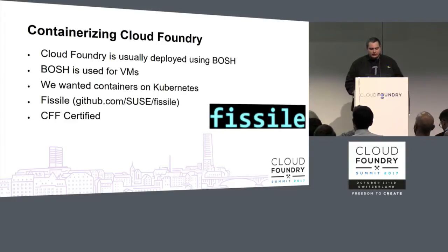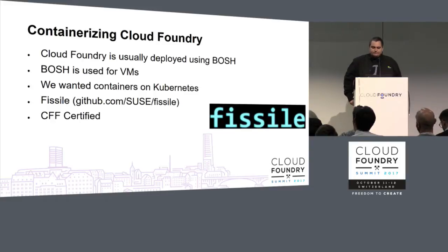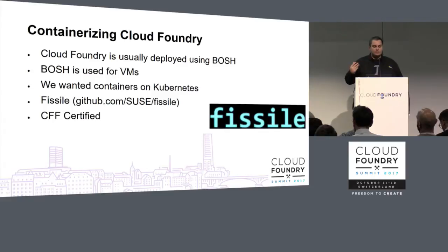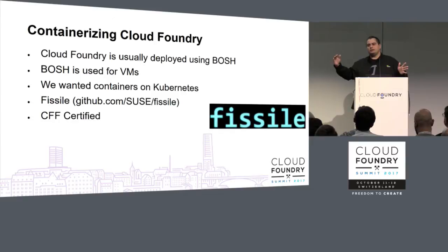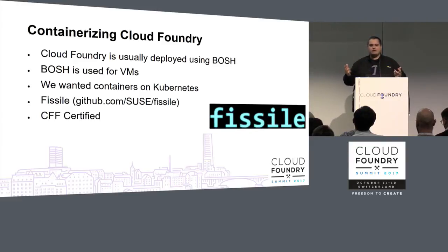So how are we containerizing Cloud Foundry? We all know that Cloud Foundry is usually deployed using BOSH, which is the toolchain that allows deployment of highly complicated systems on top of VMs. But we wanted to do containers on top of Kubernetes, so we had to develop a tool called Fissile to essentially convert BOSH releases into Docker images. We're still using BOSH — it takes you from your source code to your end-to-day deployment. A lot of BOSH is how you package your sources: packages, jobs, stem cells, and so on.